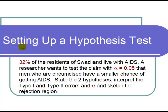This is a video on setting up a hypothesis test. The question states that 32% of the residents of Swaziland live with AIDS. A researcher wants to test the claim, with a level of significance alpha equals 0.05, that men who are circumcised have a smaller chance of getting AIDS.